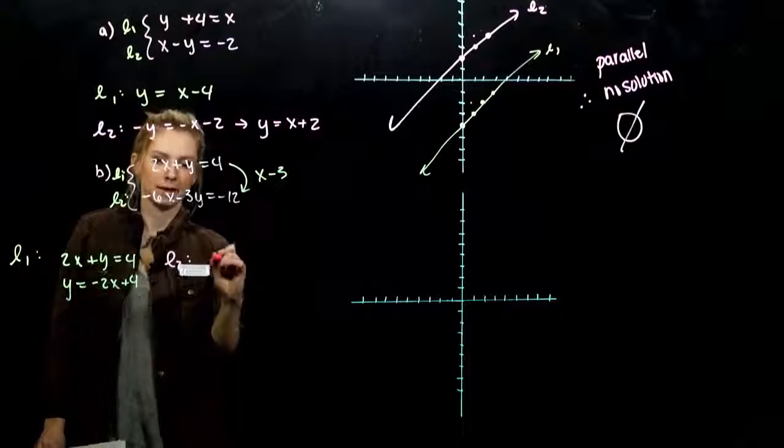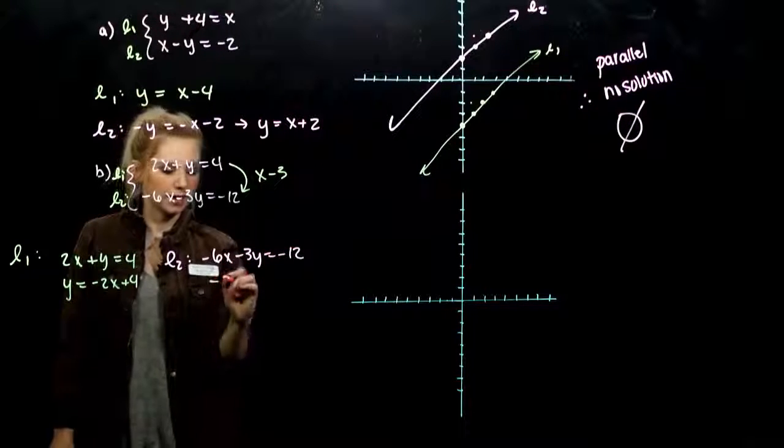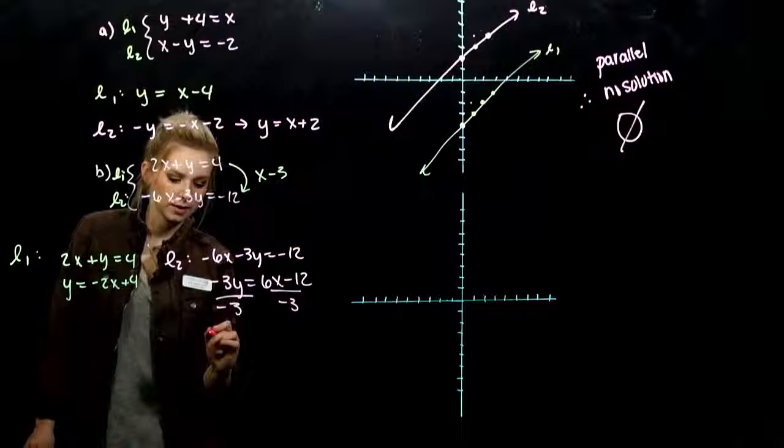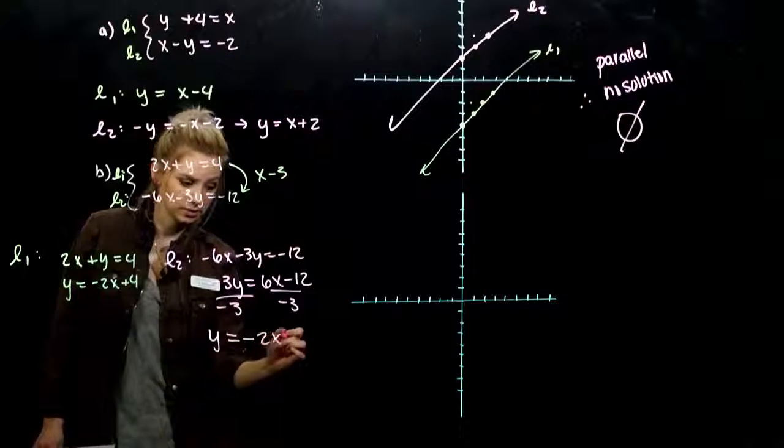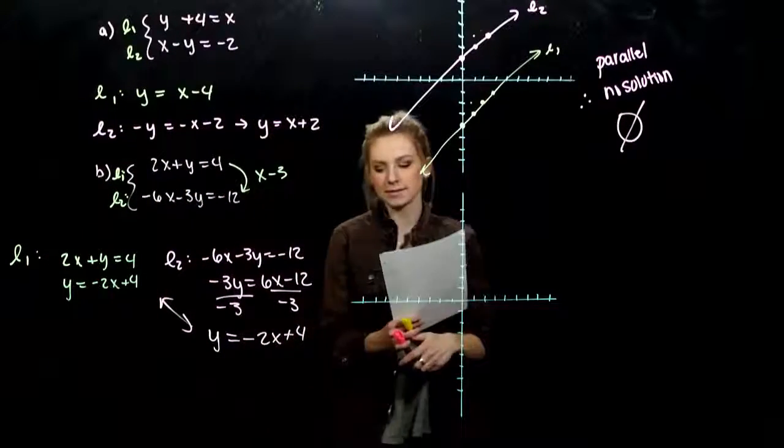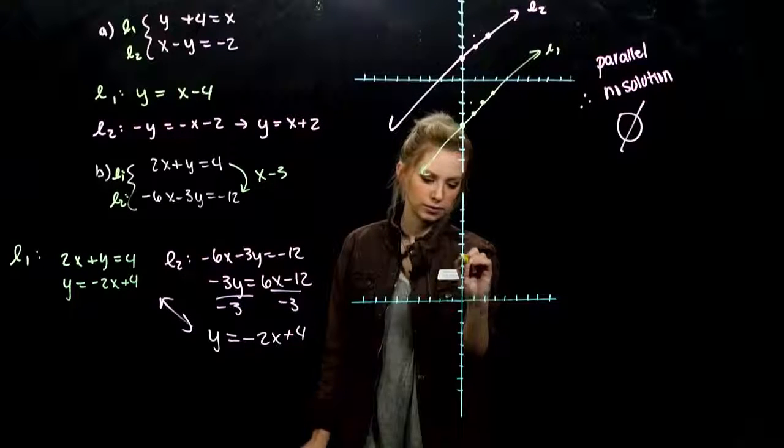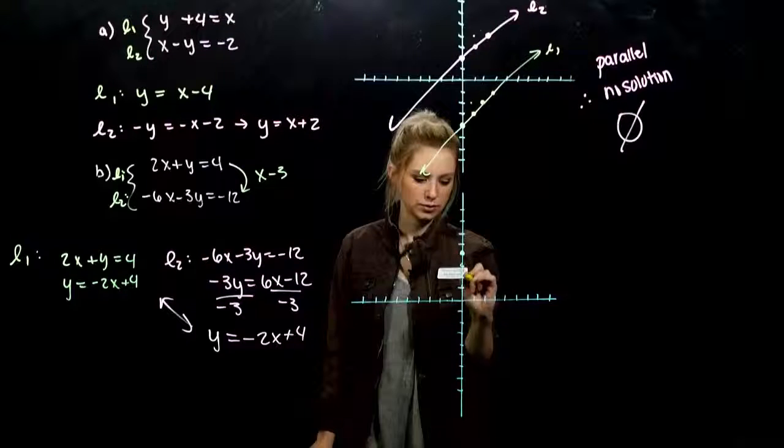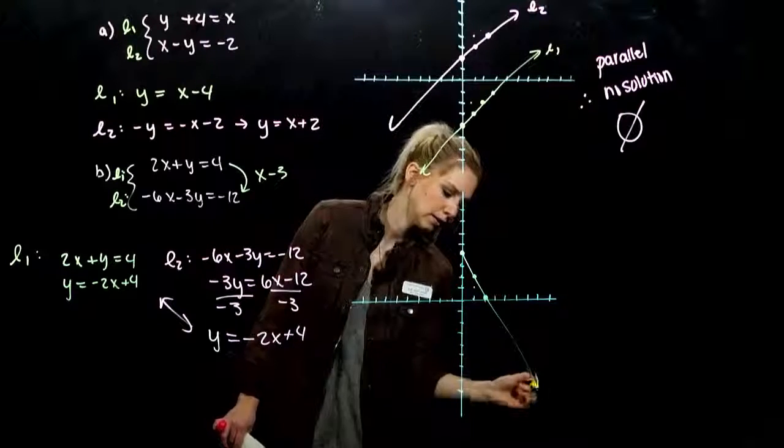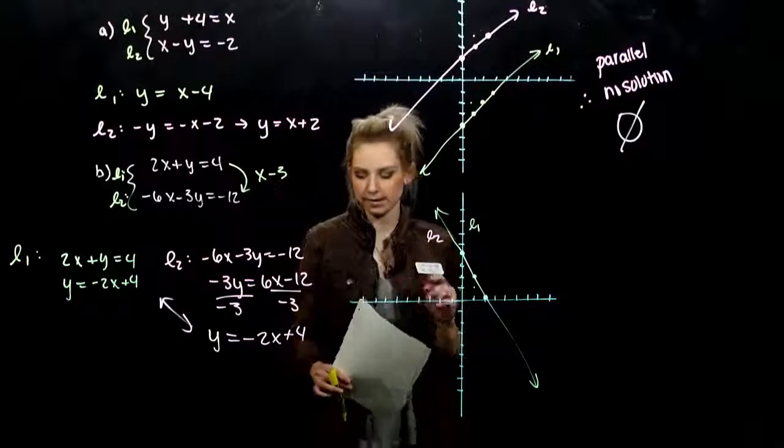Second line. If I want y on its own, we need to move our x coordinate. 6x minus 12 divided by negative 3 everywhere. So y is equal to minus 2x plus 4. So we just proved, yeah, it's the exact same line in both cases. So when we draw it, we only have to draw 1. It's going through 0, 1, 2, 3, 4. From there, I move down 2 over 1, down 2 over 1, and pretty steep. This is both line 1 and line 2 at the exact same time.